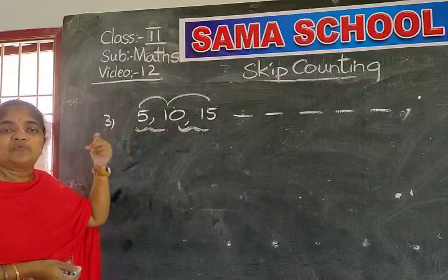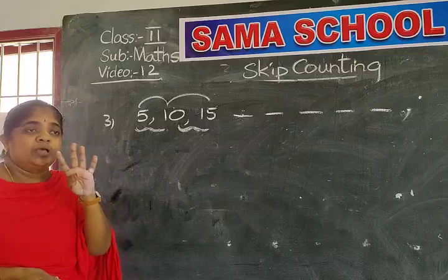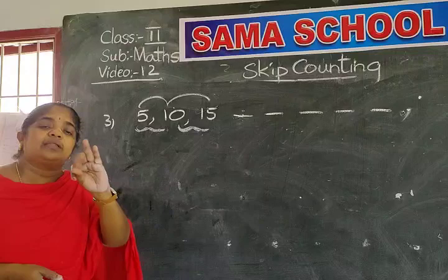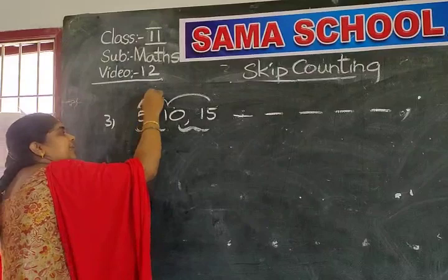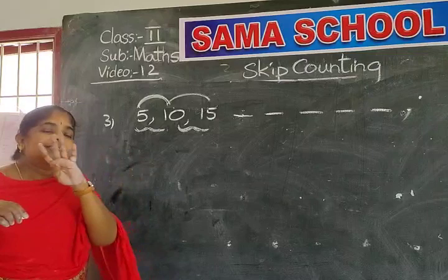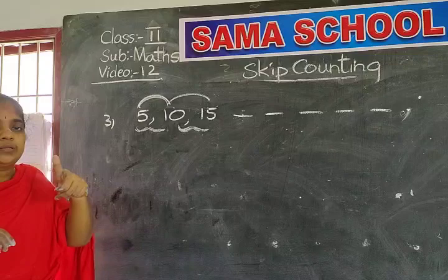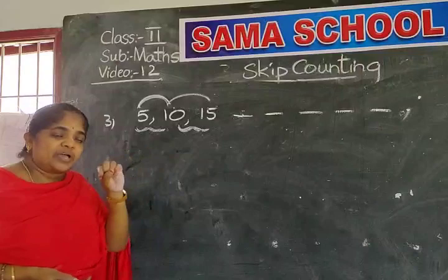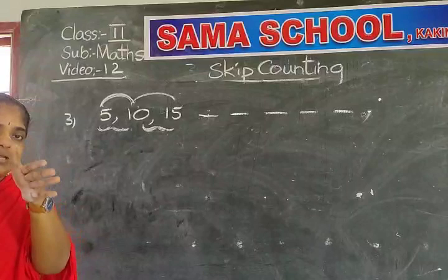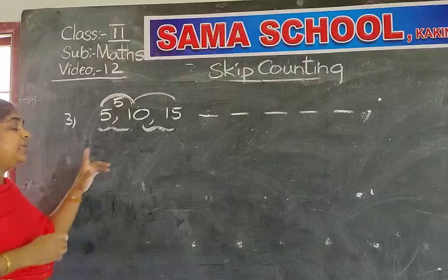In between 5 and 10, there are four numbers: 6, 7, 8, 9. Directly we wrote 10 — we took one jump to 10. From 5 to 10, in the middle we skipped four numbers. Directly we wrote the fifth number. Let's count one more time: 5 after 6, 7, 8, 9, and 10 — 10 is the fifth number after 5. So which number are we writing? We are writing the fifth number.